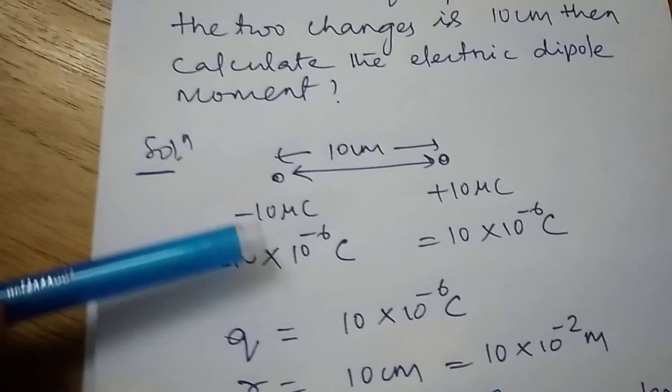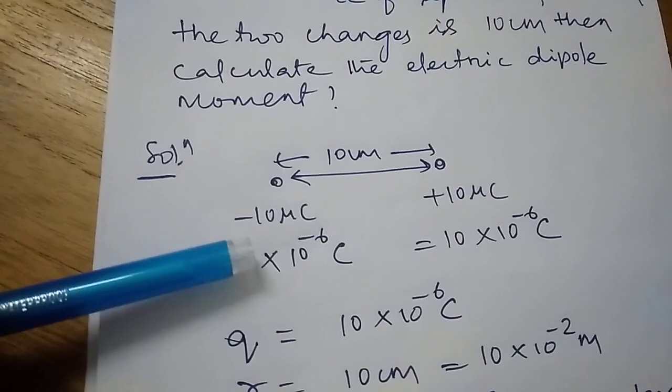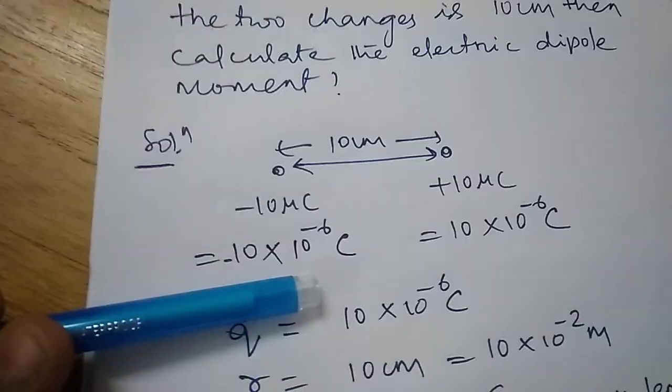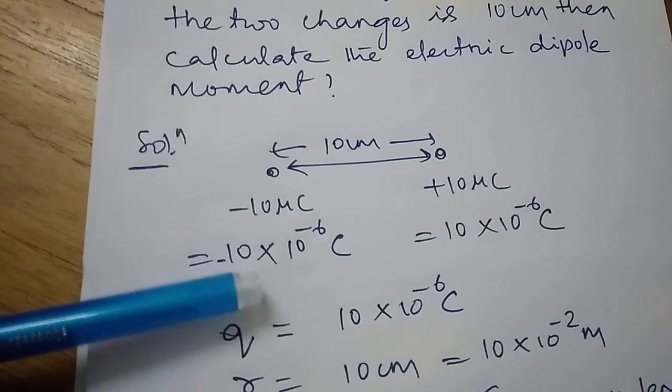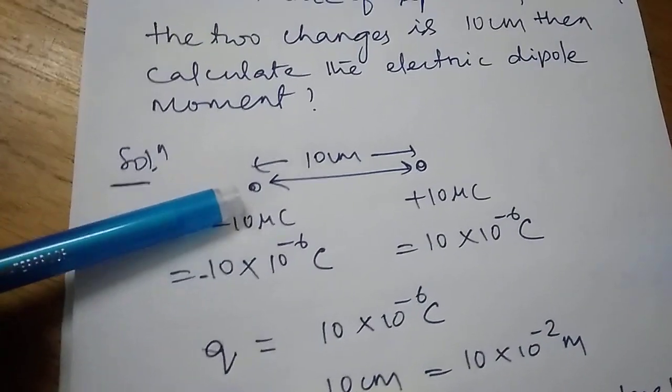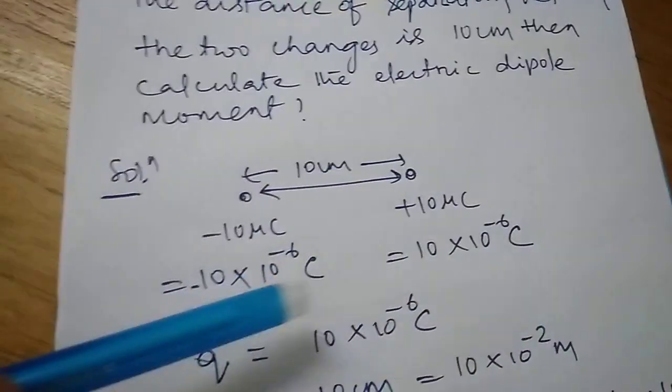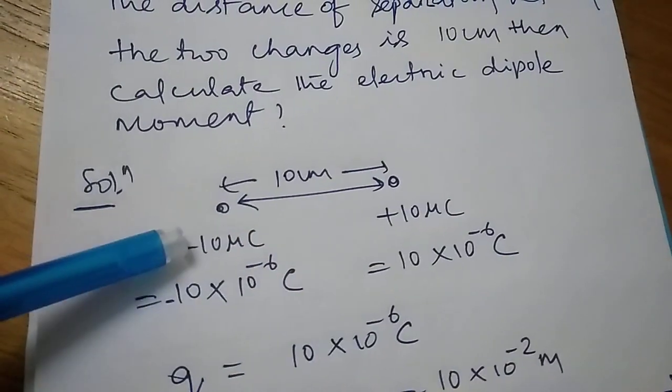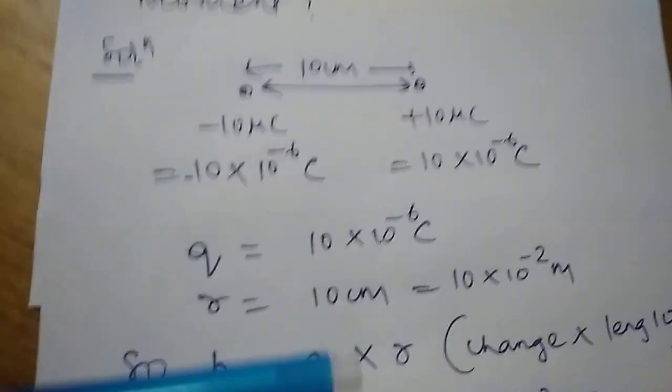First I will convert this microcoulomb into coulomb. As we know, 1 microcoulomb is 10 to the power minus 6 coulomb. So 10 microcoulomb is 10 × 10^-6 coulomb. A dipole carries two charges of same magnitude but opposite nature. One charge will be negative and another charge will be positive.